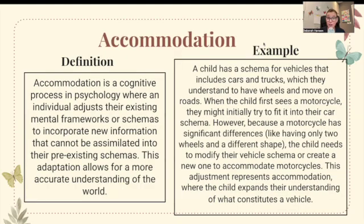Accommodation is a cognitive process where an individual adjusts their existing mental frameworks or schemas to incorporate new information that cannot be assimilated into pre-existing schemas. For example, a child with a schema for vehicles like cars and trucks — which have wheels and move on roads — sees a motorcycle for the first time. Because it's significantly different, having two wheels and a different shape, the child must modify their vehicle schema to accommodate motorcycles.